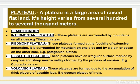Next, Piedmont plateau. These plateaus are formed at the foothills of extensive mountains. It is surrounded by mountains on one side and by a plain or ocean on the other side. For example, the Patagonian plateau. Dissected plateaus have an irregular surface marked by canyons and steep narrow valleys formed by the process of erosion, for example, the Colorado plateau.